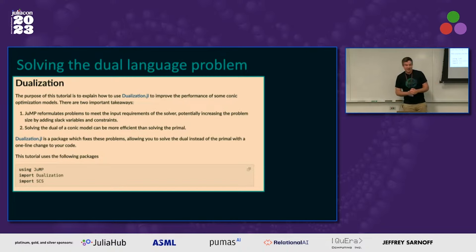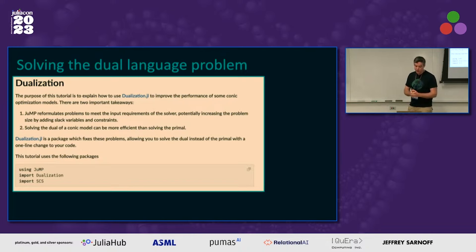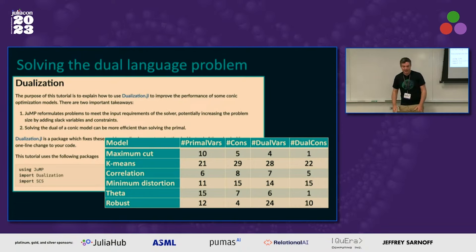Julia solved the two-language problem, but JuMP solved the dual-language problem. There's a package called Dualization that I've recently become aware of, which helps you work with the dual of an optimization problem much more easily. It reformulates problems to meet solver input requirements — potentially solving the dual of conic models, which can be much more efficient than solving the primal. In some cases it can be significantly better. Primal variables and constraints get automatically transformed into dual variables and constraints.